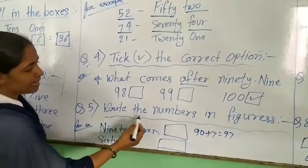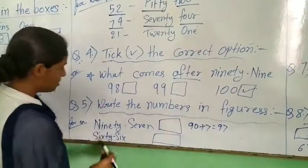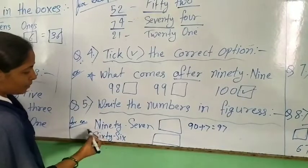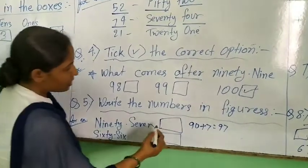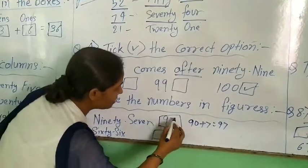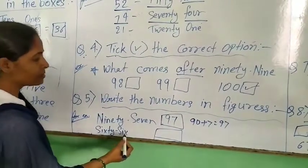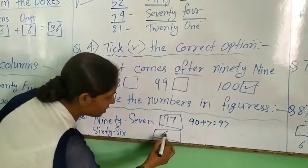Next question. Write the numbers in figures. 97, numbers in figure 97. 66, numbers in figure 66. 96.